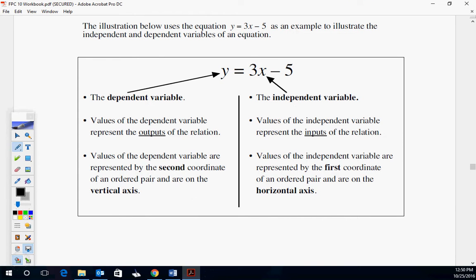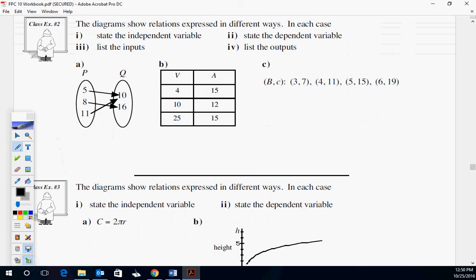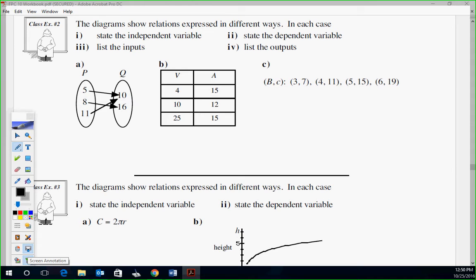Now we'll get to some examples. The diagram shows relations expressed in different ways. In each case, state the independent variable, state the dependent variable, list the inputs, list the outputs. In A, Caleb, what's the independent variable? P is your independent. Independent is P. Ollie, what's your dependent? Q. Dependent is Q. Your list of inputs? 5, 8, and 11. Your list of outputs? 10 and 16.